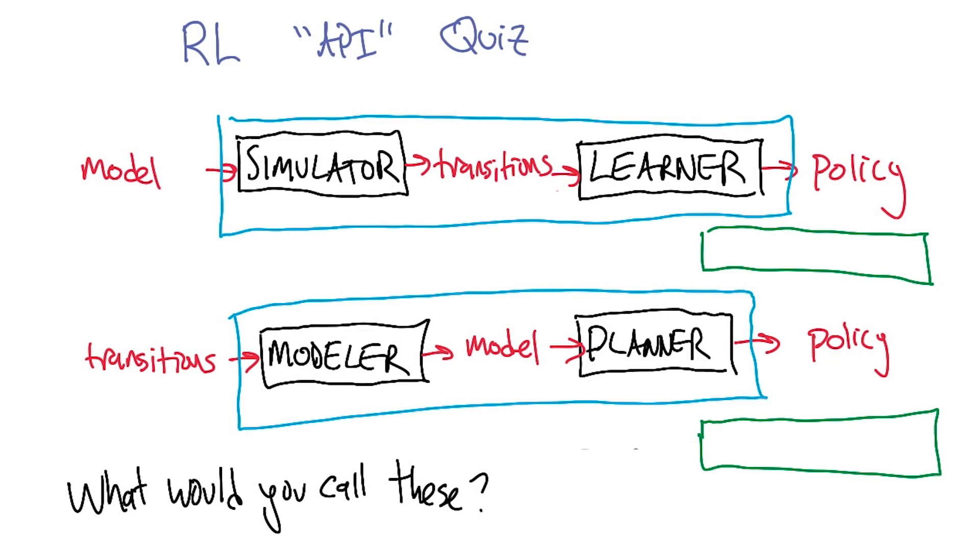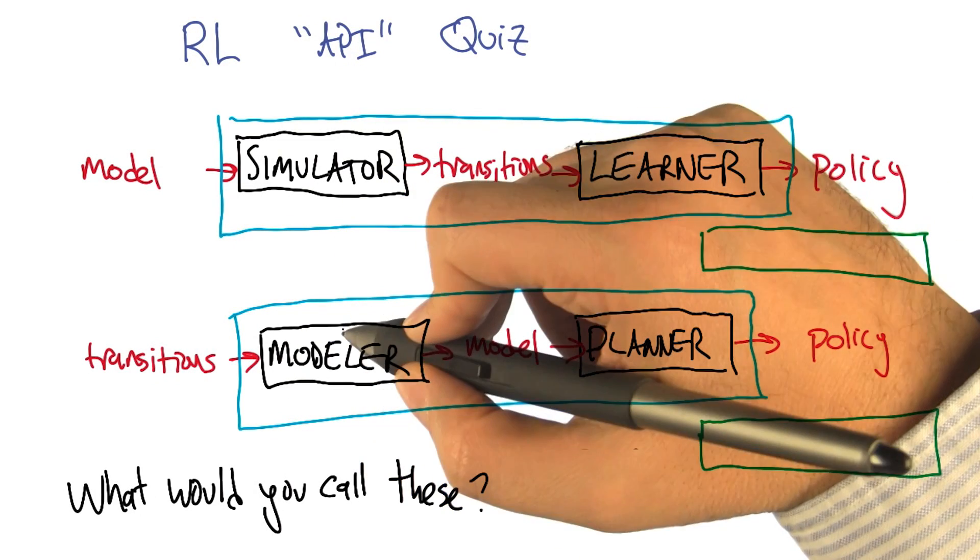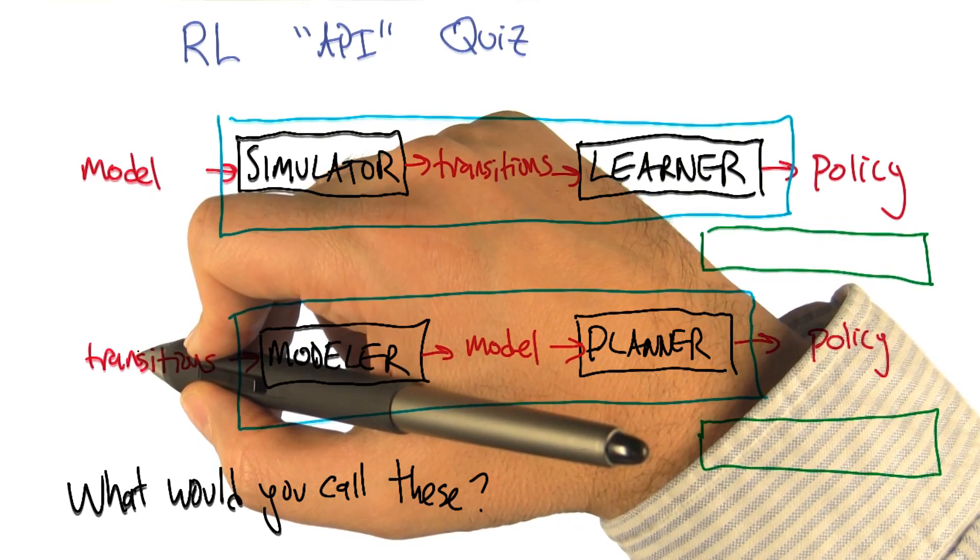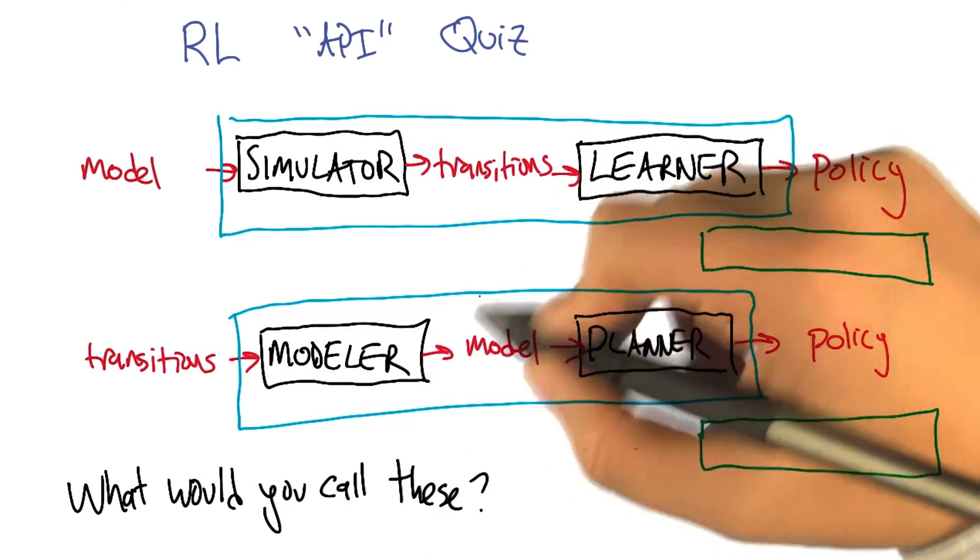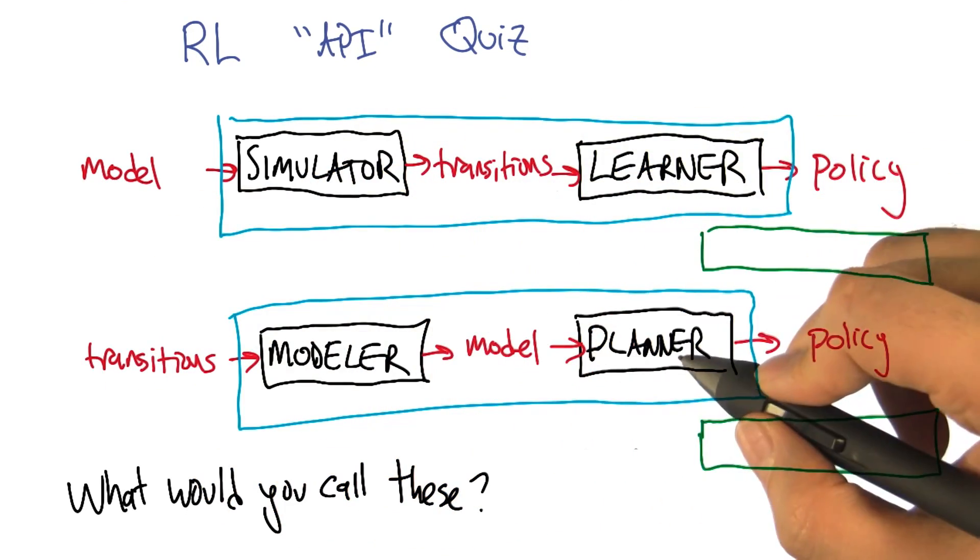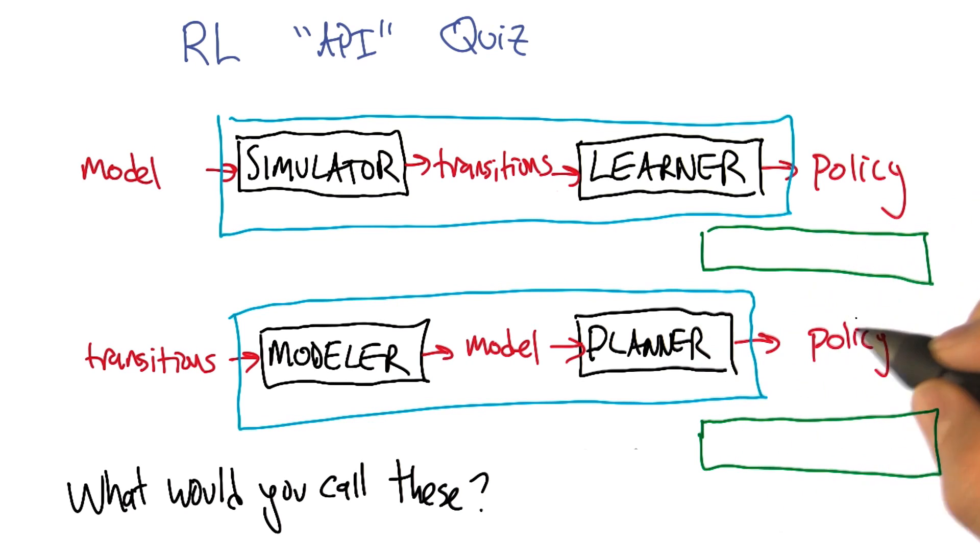Your suggestion was to take a modeler and use it to turn transitions into a model. But once we have a model, you already told us last time how we can use a planner to spit out a policy.